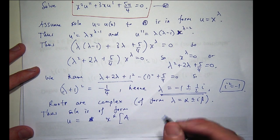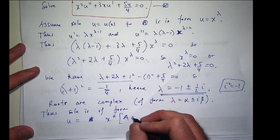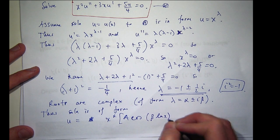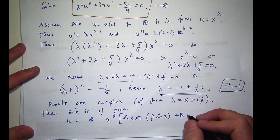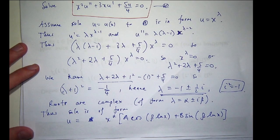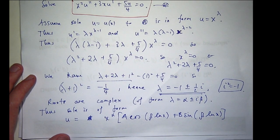It's the following form: x to the α times the following, where big A and big B are arbitrary constants.